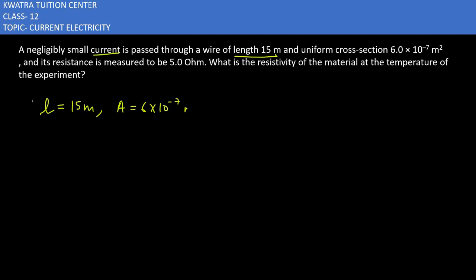The cross-section is 6 × 10^-7 meter square. The third thing is resistance, which is 5 ohms. We need to find the resistivity of the material at the temperature of this experiment, so here we have to find rho.